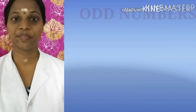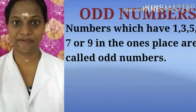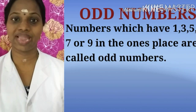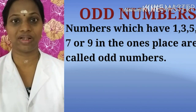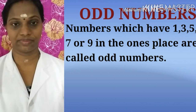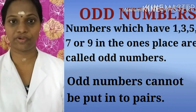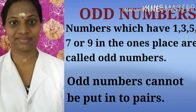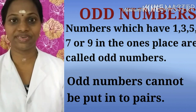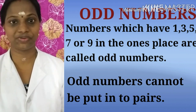The next topic is odd numbers. Odd numbers means numbers which have 1, 3, 5, 7 or 9 in the ones place is called odd numbers. Odd numbers cannot be put into pairs.